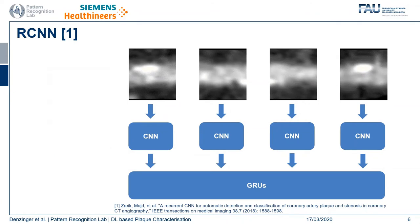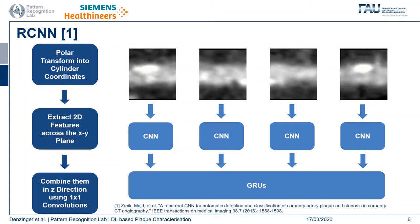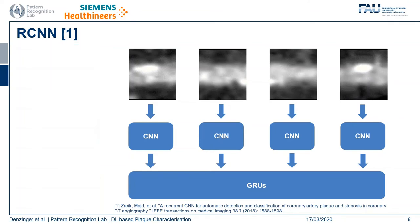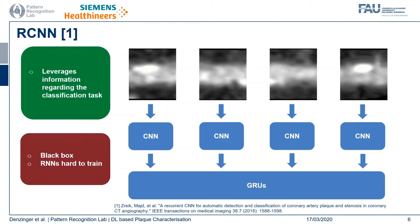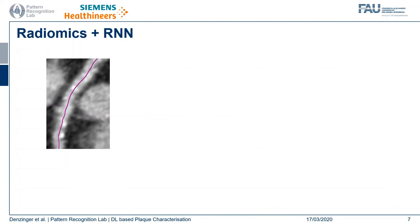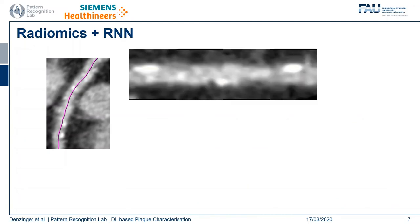To emphasize this further, we also transform the volume stack into cylinder coordinates. By this, the radial information from the centerline to the outside becomes most prominent. We also extract 2D features for each single axial plane first, then combine them in the set direction using 1×1 convolution across the set dimension. This leverages the task information nicely, but this approach is still somewhat of a black box, and RNNs are generally known to be hard to train.